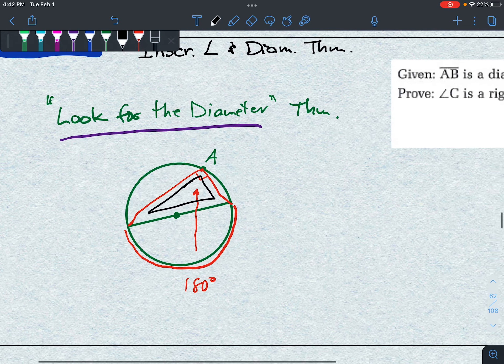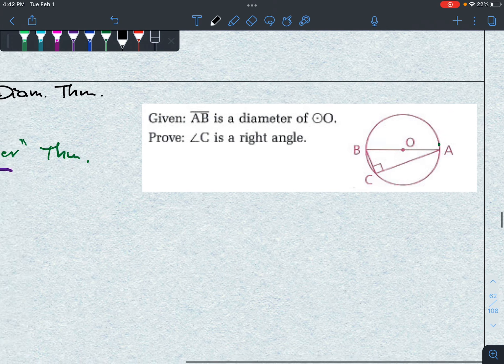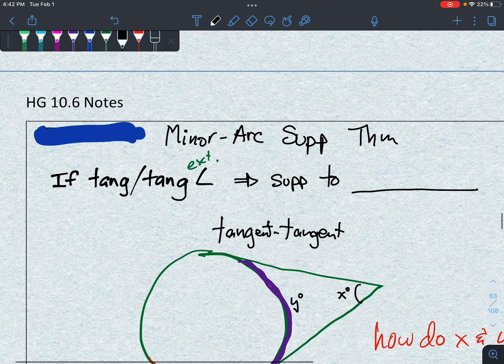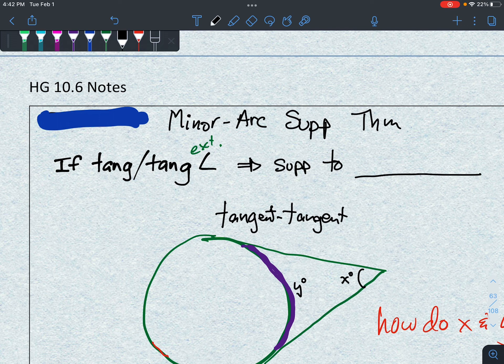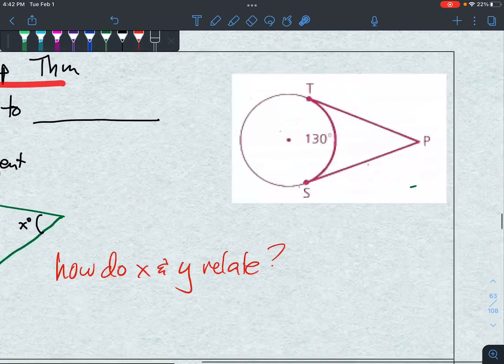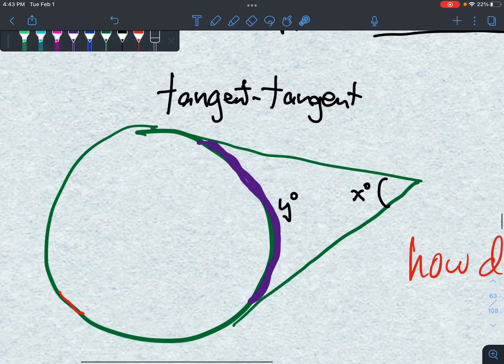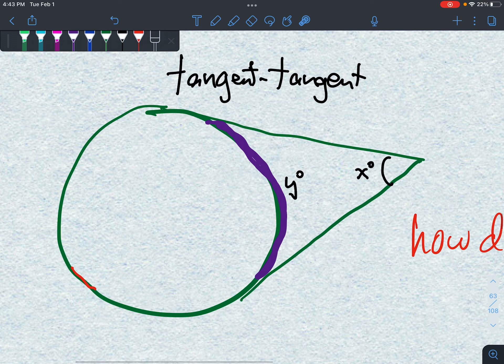Last one. This is called a minor arc supplementary theorem. I don't think that's a great name for it, doesn't really describe things for you very well. So I'm going to suggest that if you use this, that you just use this phrase, probably easier to use, but feel free to use that name.